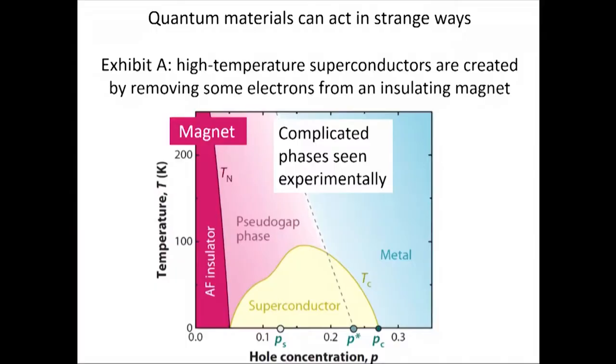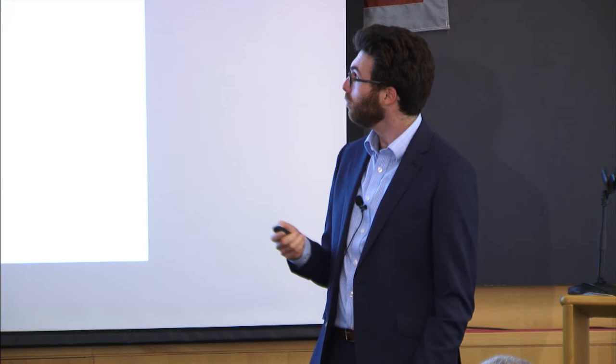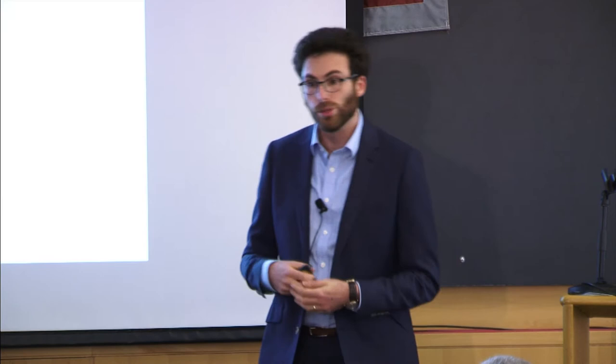Entanglement is the important feature of quantum mechanics, and quantum mechanics can give you weird things. Experimentally, if you take certain materials — particular insulating magnets in a phase diagram — and remove some electrons, you get a high-temperature superconductor. This involves quantum mechanics and the interaction of electrons in ways we don't yet totally understand. This motivates us to understand the collective behavior of quantum objects like electrons.